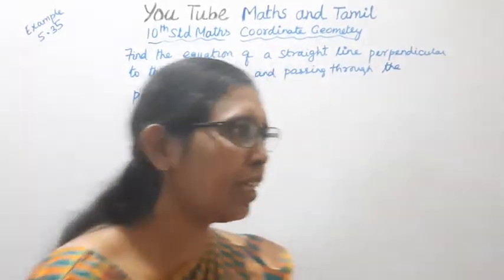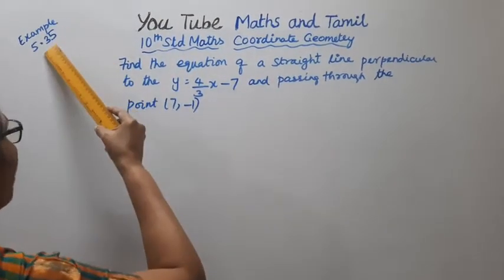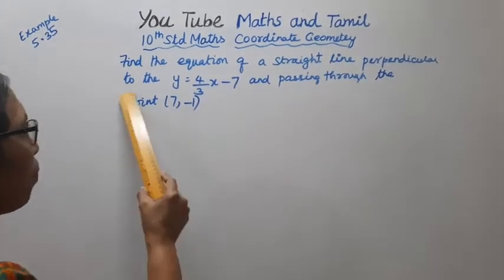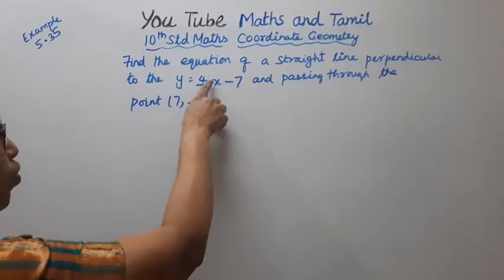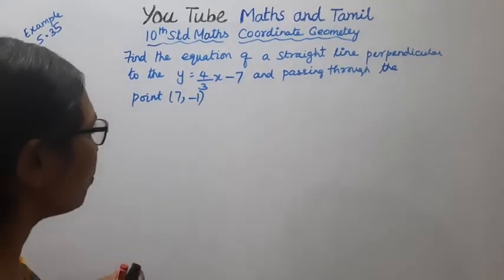Hello students, welcome to Maths and Tamil channel. This channel Maths Coordinate Geometry Example 5.35: Find the equation of a straight line perpendicular to the line y equal to 4 by 3x minus 7 and passing through the point 7 comma minus 1.